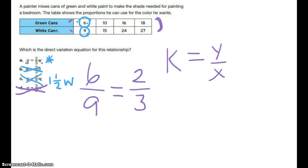The only one that could possibly work is letter choice A. The green cans, 6, is 2 thirds of 9. If I take 9 and I divide it by 3, I get 3. And then if I multiply it by 2, I do get 6.